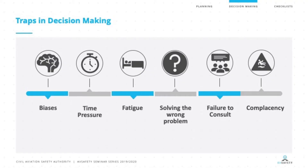The second trap is time pressures. We talked about time pressures playing into our planning and maybe preventing us from planning. It also plays into our decision-making and it can work both ways. When we're under pressure and time is of the essence, maybe we don't make effective decisions because we don't have enough time to think through all of the areas that we need to consider.